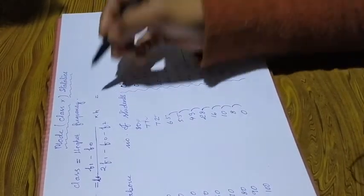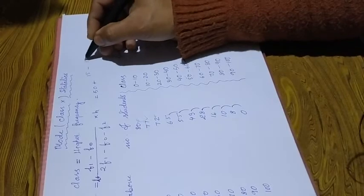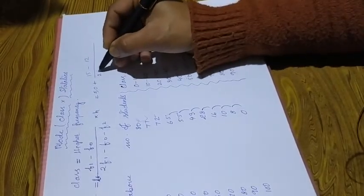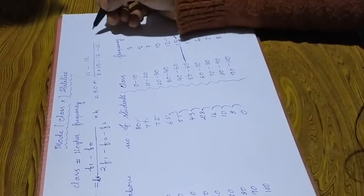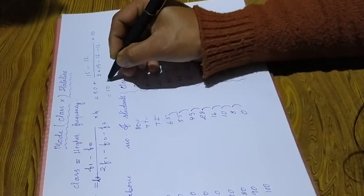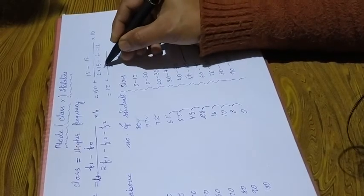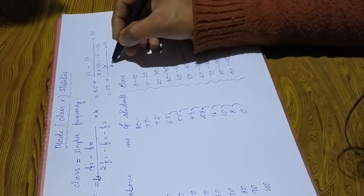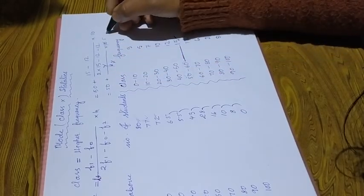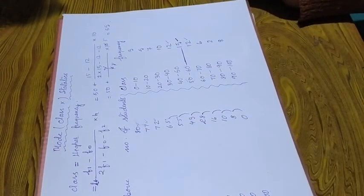Applying the mode formula: Mode equals L plus (f1 minus f-naught) divided by (2 times f1 minus f-naught minus f2) multiplied by h. So Mode equals 50 plus (15 minus 12) divided by (2 times 15 minus 12 minus 12) into 10. That gives 50 plus 3 divided by 6 into 10, which equals 50 plus 5, giving a Mode of 55.